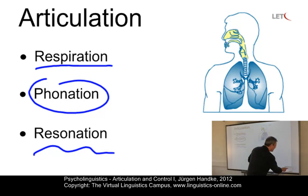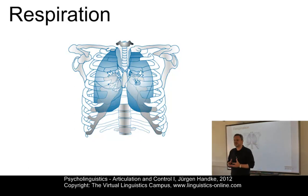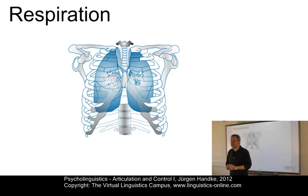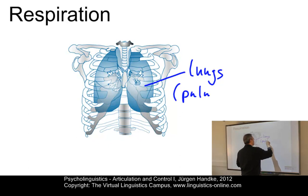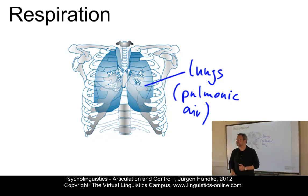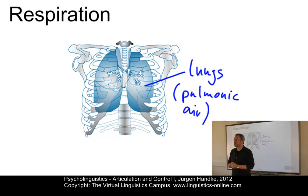Let us look at respiration first. Before any sound can be produced at all, there has to be some form of energy. In speech, this energy takes the form of a stream of air normally coming from the lungs. Here are the lungs. This airstream is referred to as pulmonic air. The whole respiratory system is contained within the chest or thorax. There we have the lungs, which provide the reservoir for pulmonic airflow in speech. The lungs are connected to the trachea.